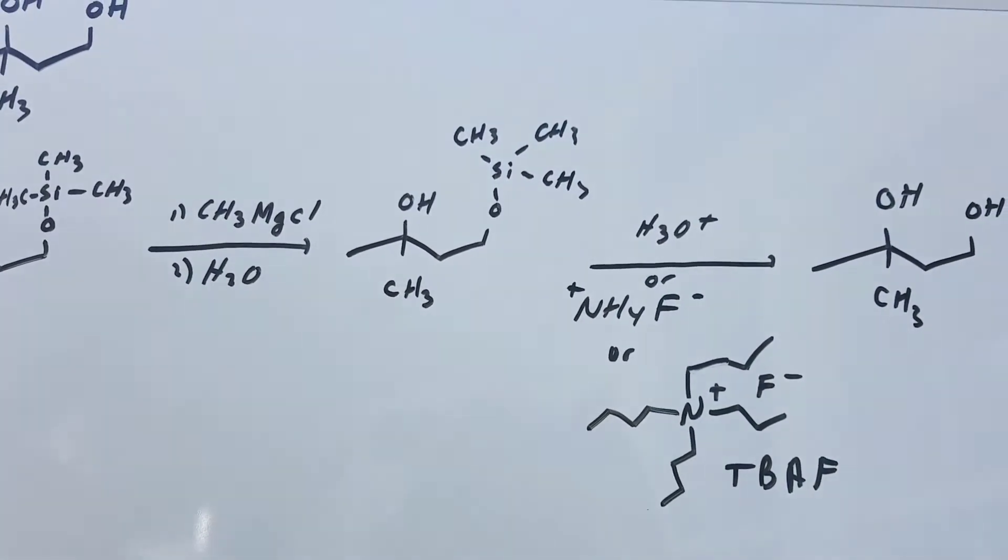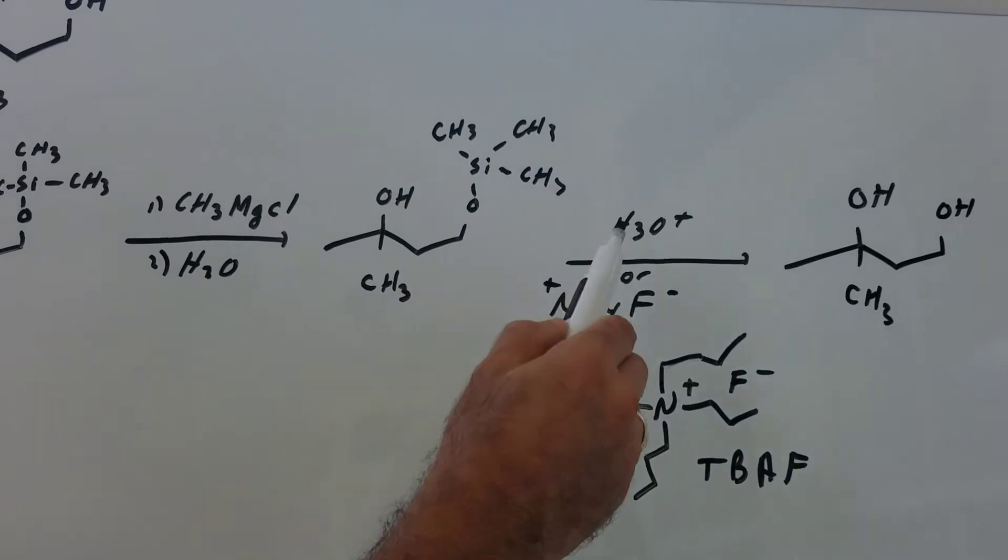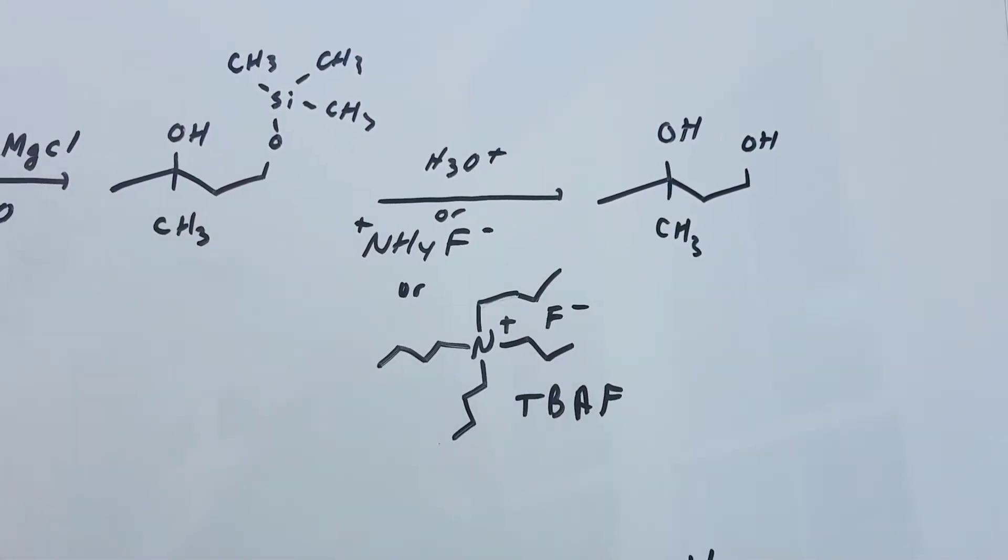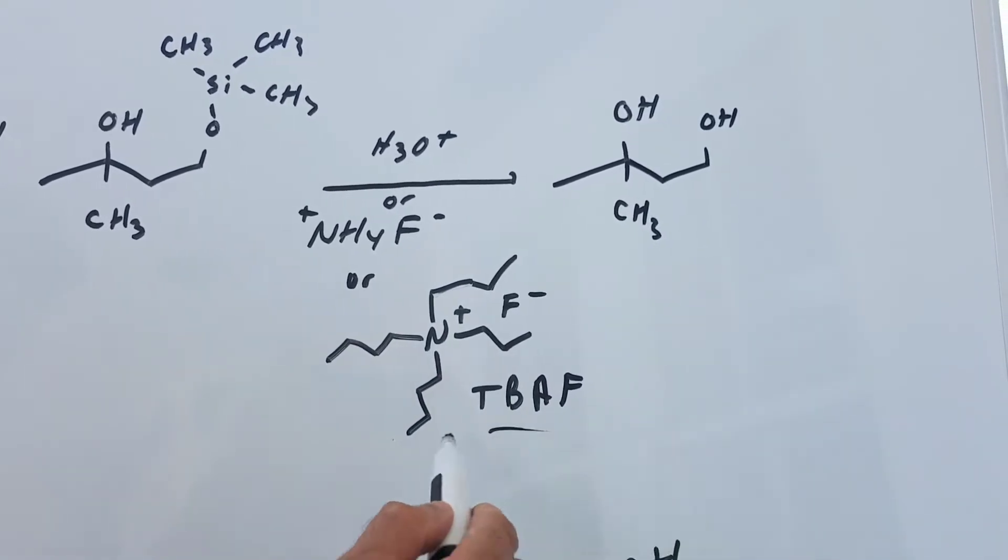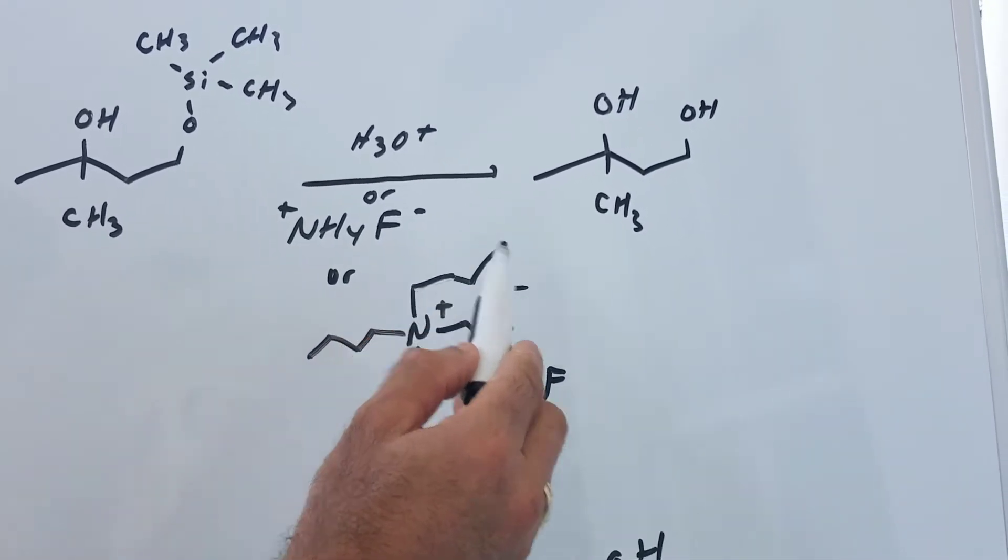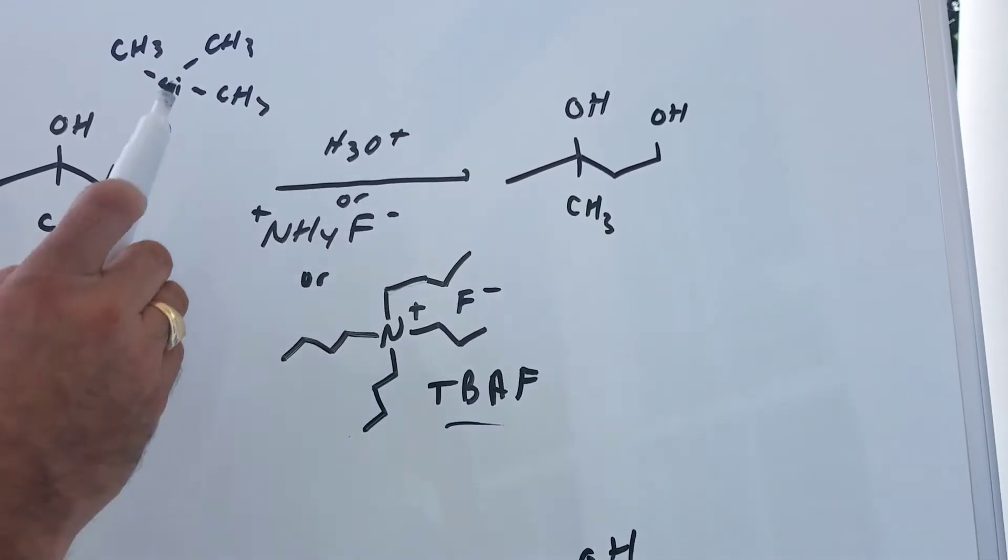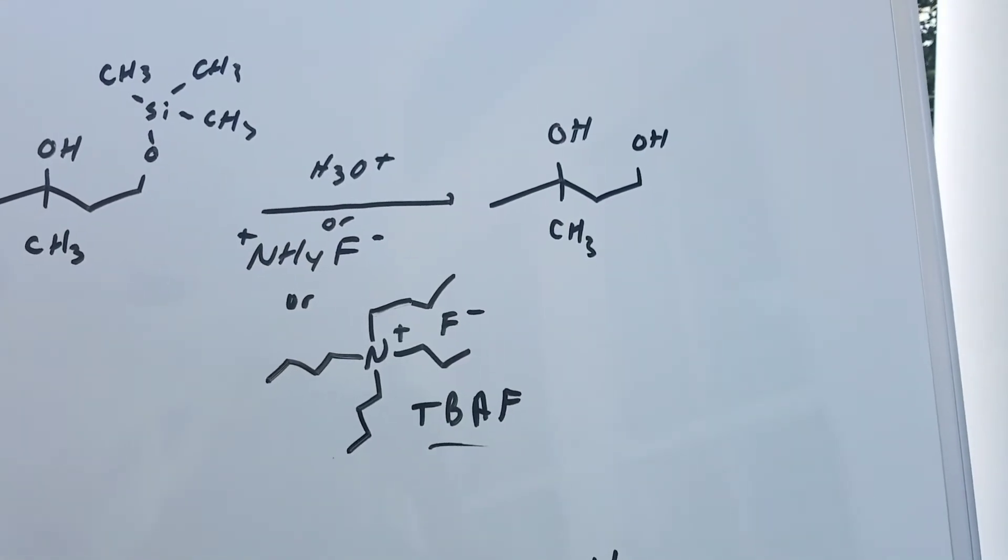And then finally, we're going to remove the protecting group. There's a few ways to remove it. If it's a very simple silicon protecting group, we can just use H3O plus or we can use ammonium fluoride or this monster. It looks scary, but it's called TBAF. This is actually called tetra butyl ammonium fluoride. Any one of these would simply knock off the silicon and replace it with an OH to get the final product.